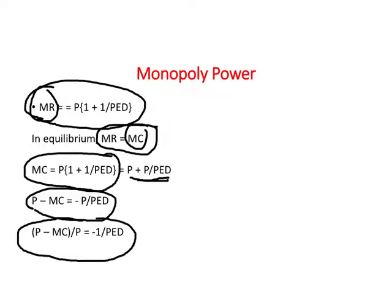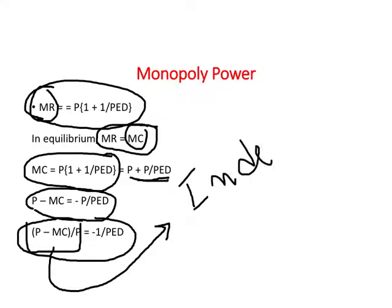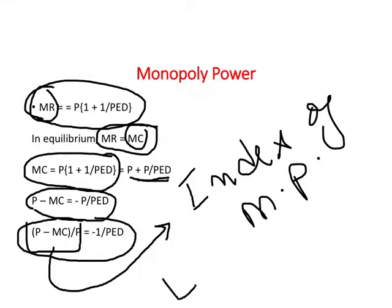This part, which measures the difference between price and marginal cost divided by price, is referred to as the Index of Monopoly Power. It is due to economist Abba P. Lerner and is called Lerner's Index of Monopoly Power. It equals negative one divided by the price elasticity of demand.